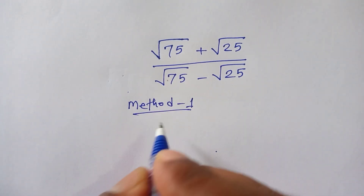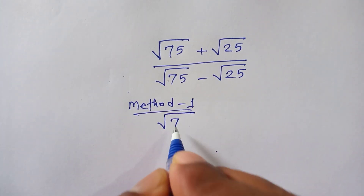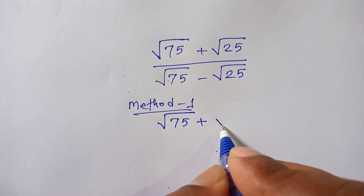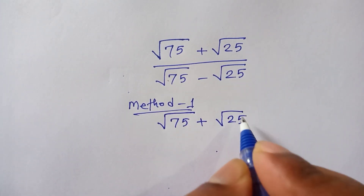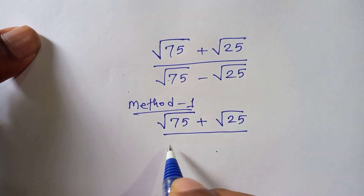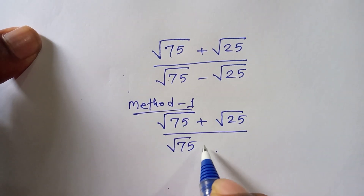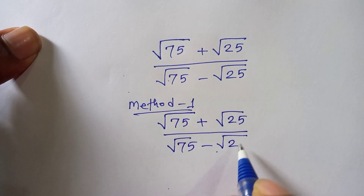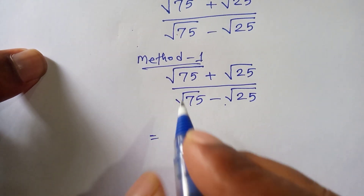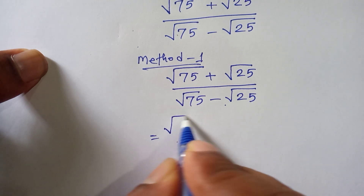We are given: under a square root of 75 plus under a square root of 25, over under a square root of 75 minus under a square root of 25. Next step, 75 can be written as under a square root of 3 times 25.